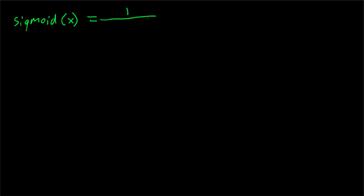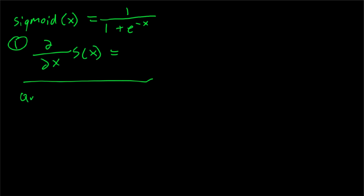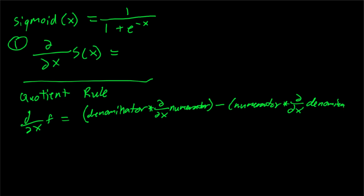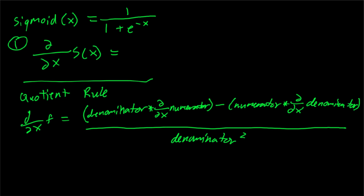So first off, the sigmoid function is 1 over 1 plus e to the negative x. There are two important things we need to review quickly. First is the quotient rule, which states that the derivative of a function with respect to x is equal to the denominator times the derivative of the numerator minus the numerator times the derivative of the denominator, all divided by the denominator squared. We need the quotient rule to take the derivative of the sigmoidal function, and the second piece we need is the chain rule.